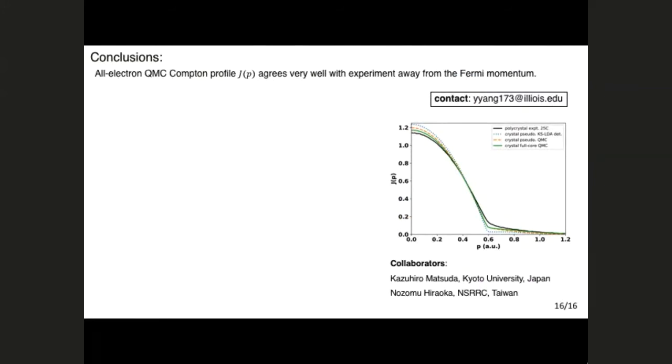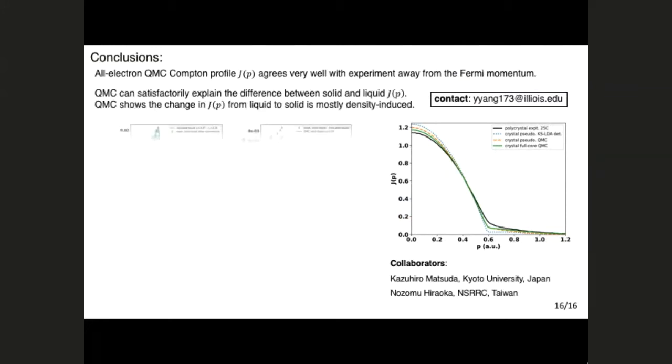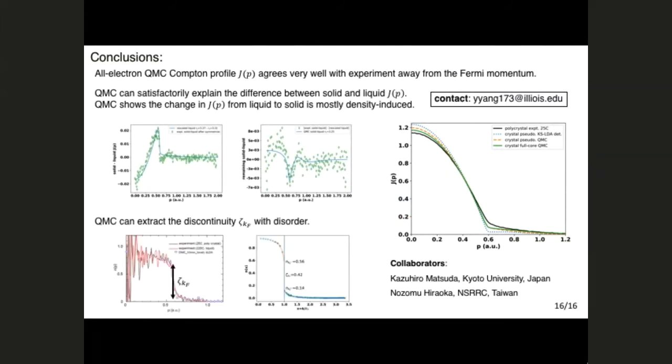So basically, in conclusion, we were able to perform accurate quantum Monte Carlo simulations, and our all electron results agree very well with the experiment away from the Fermi surface. We were able to help them disentangle the effect of density and crystal formation in the change of their Compton profile from the liquid to the solid. And we were able to help them extract the magnitude of the discontinuity in the Compton profile. So with that, I would like to thank you for your attention. I would like to thank the QMCPACK developers for making this code, thoroughly testing this code and making the science much easier. And I would like to ask if there's any questions.